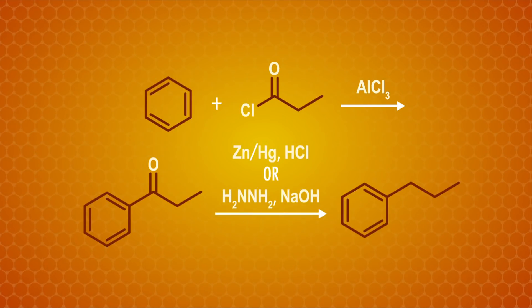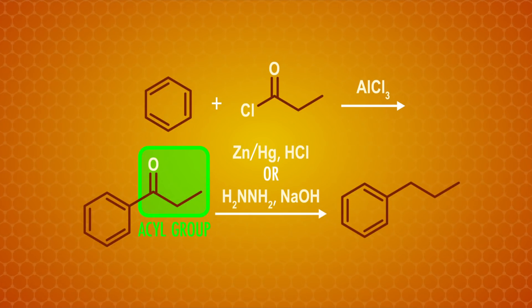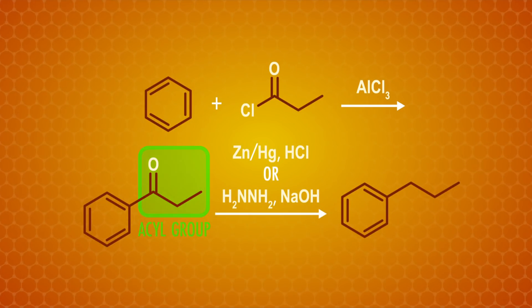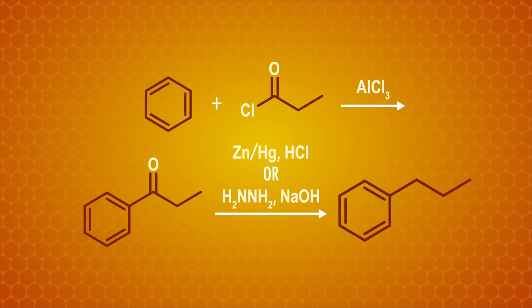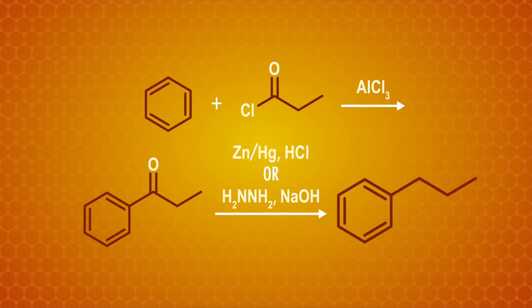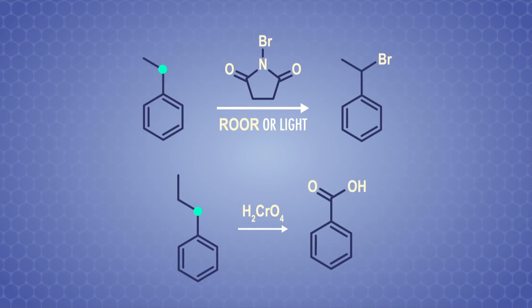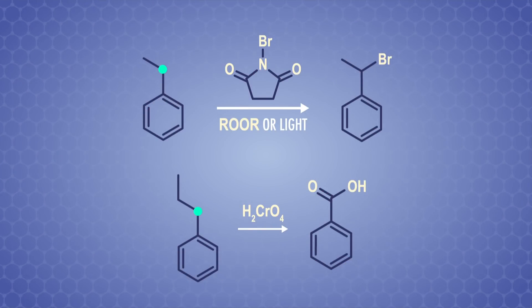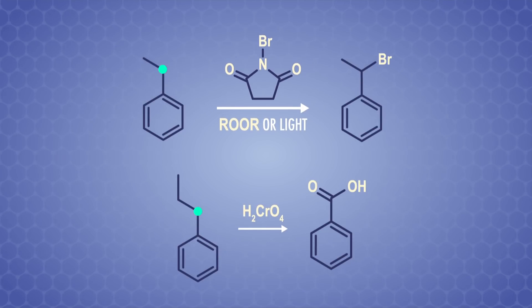In episode 39, we learned how to work around both over-alkylation and rearrangement using a Friedel-Crafts acylation reaction. By introducing the deactivating acyl group, we avoid the over-alkylation issue. And by reducing the carbonyl completely off the molecule, we can form an alkylated product without rearrangement. We also saw that benzylic carbons have special reactivity, allowing them to be halogenated or oxidized to carboxylic acids.